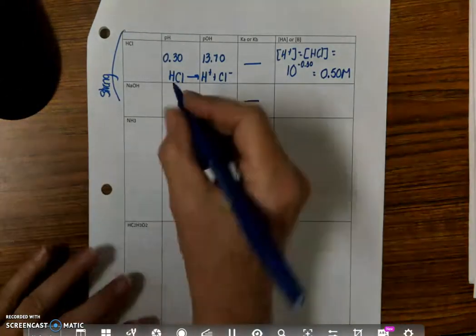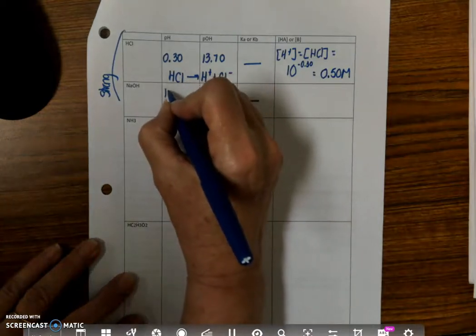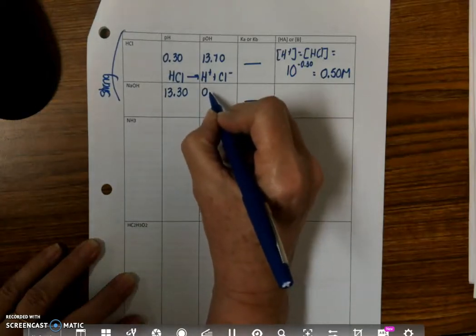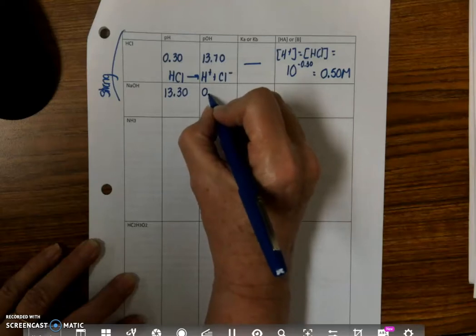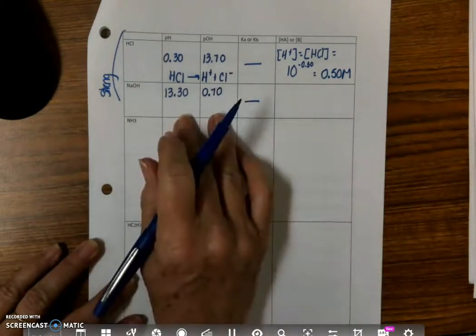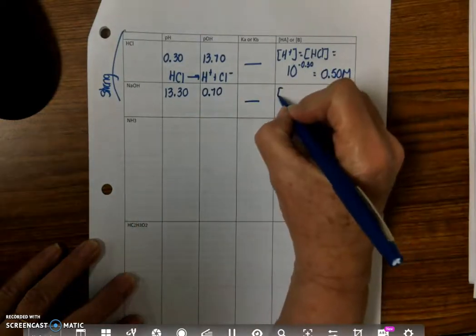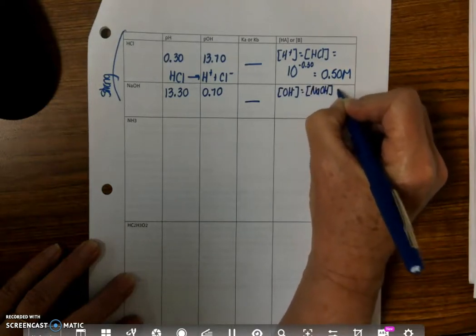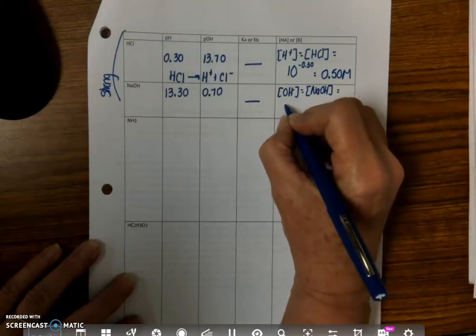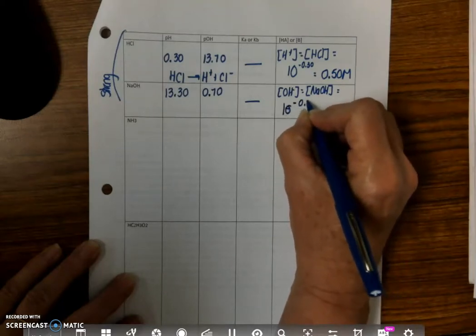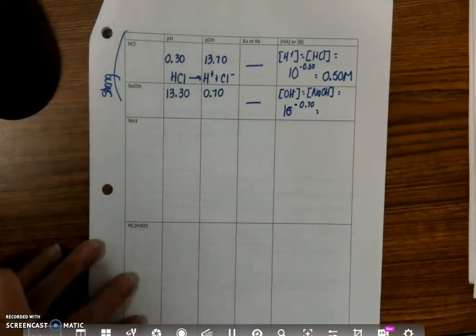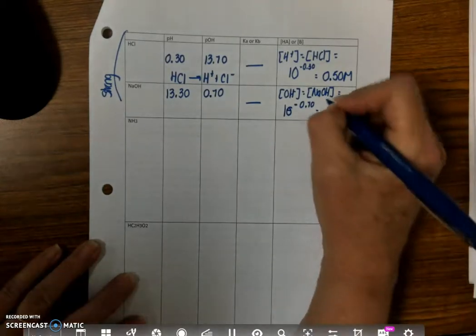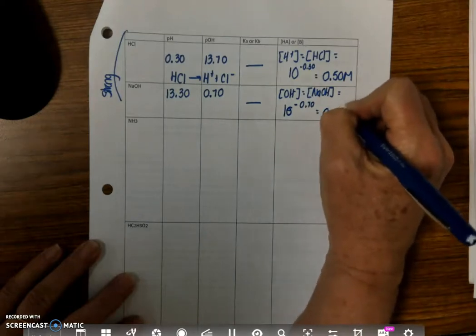Now, for the sodium hydroxide, we get about 13.30 for this, which means my POH is 0.70. And so now I look at this, and I say, okay, if I want hydroxide ion concentration, is equal to the sodium hydroxide concentration, which is equal to 10 to the negative 0.70. And I haven't actually worked that out, so I'm going to do that right now, and that equals 0.20 molar.